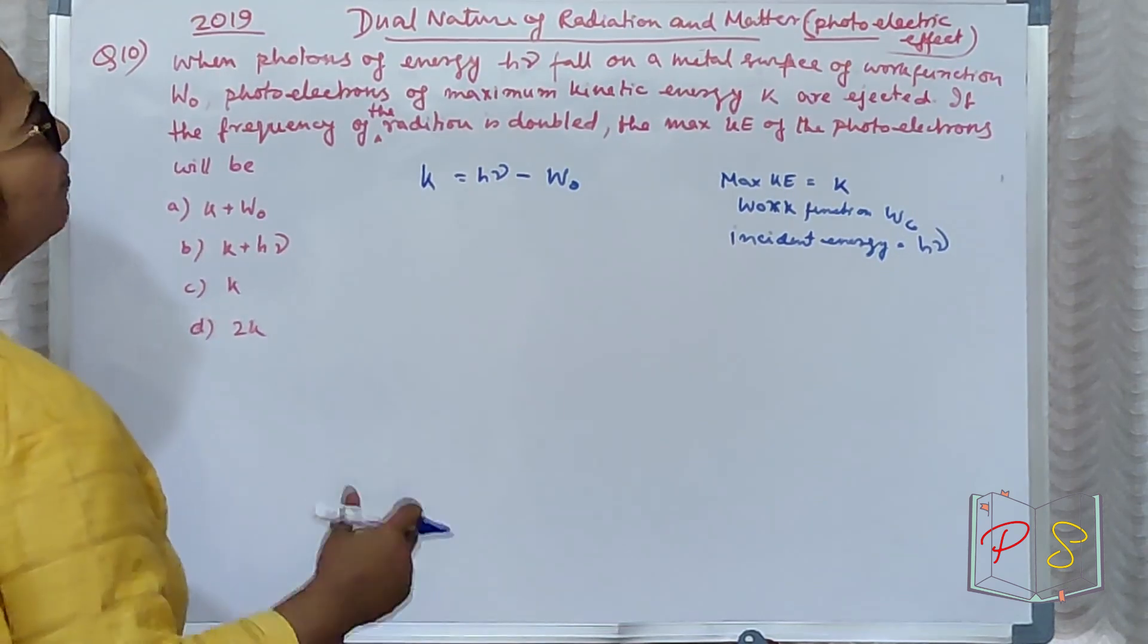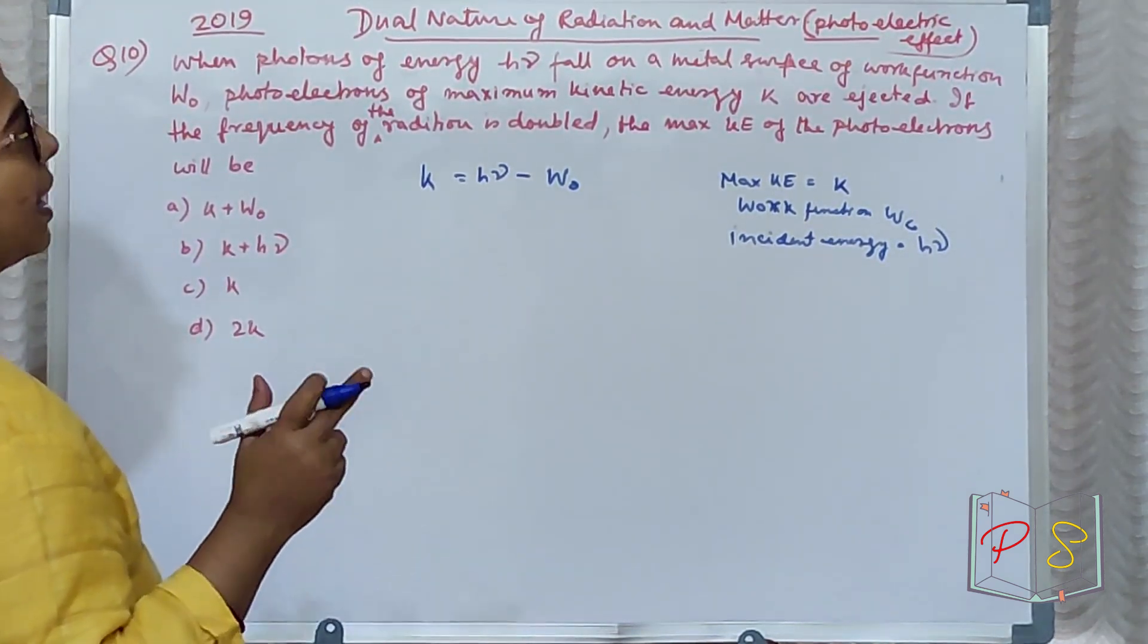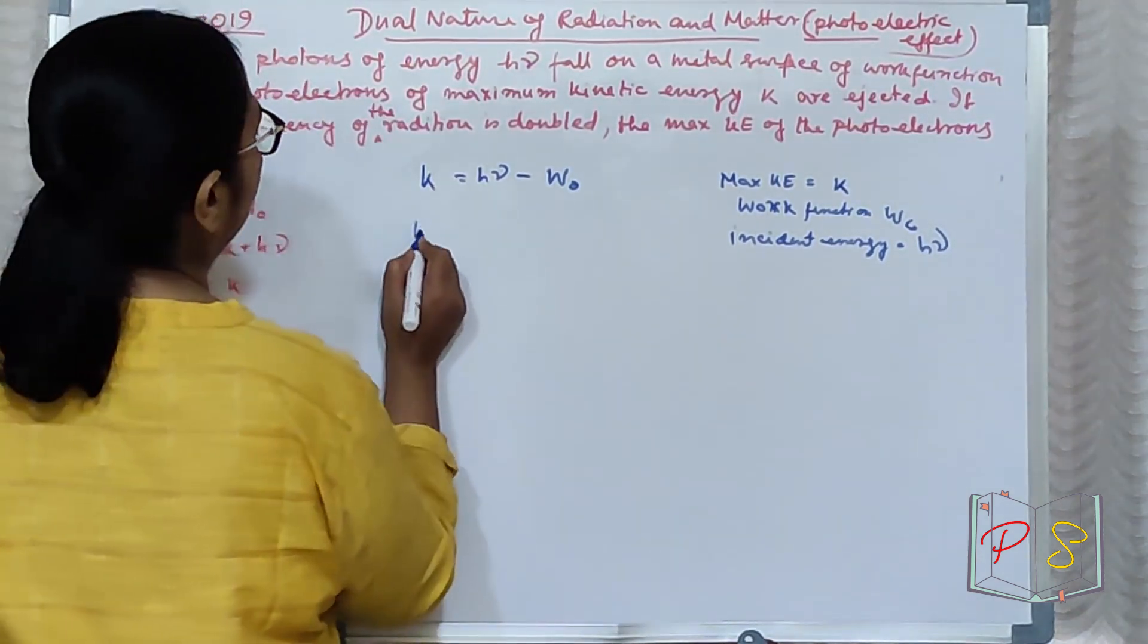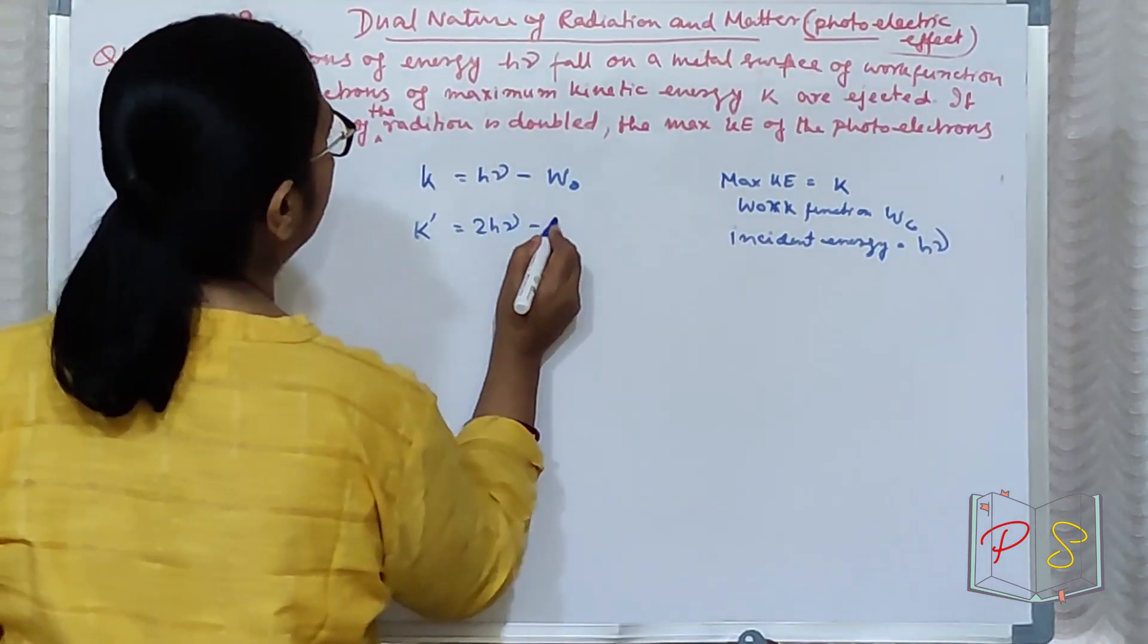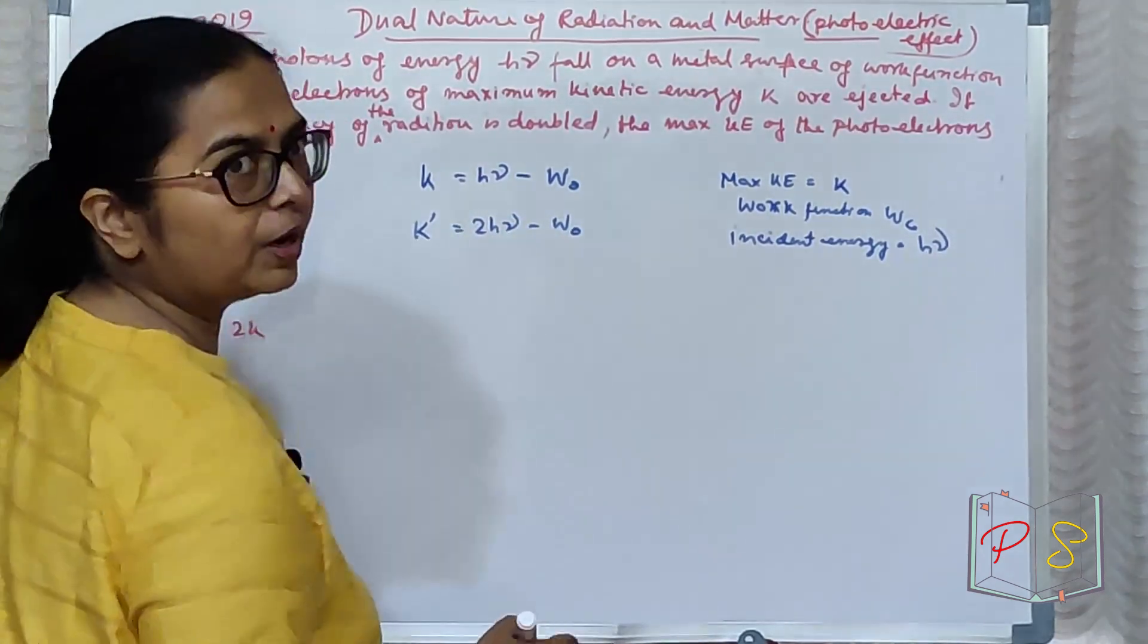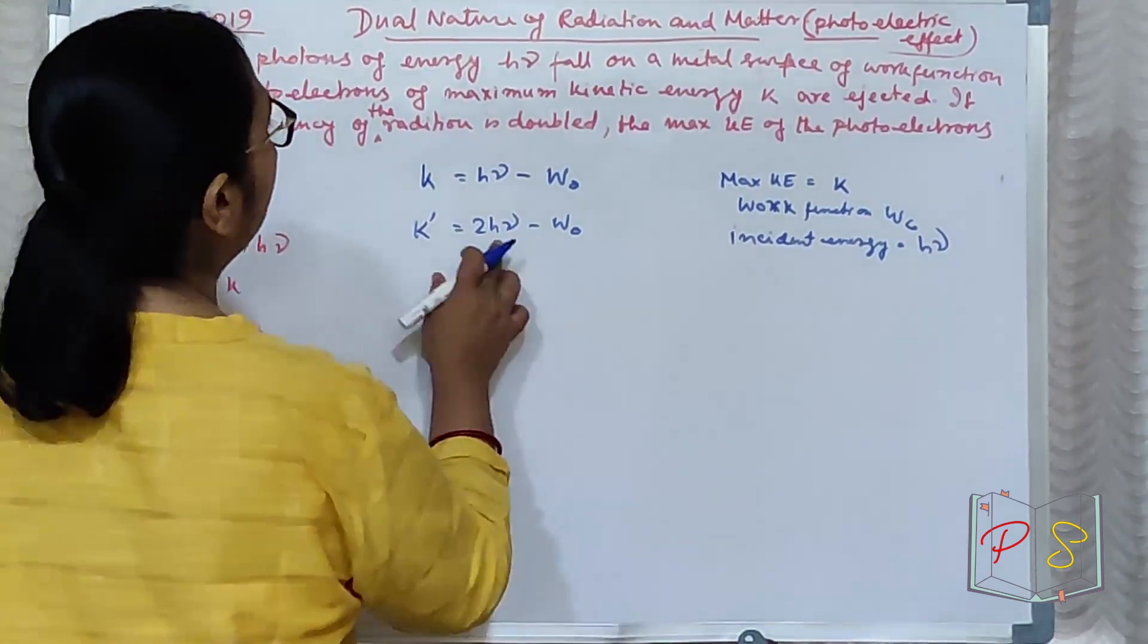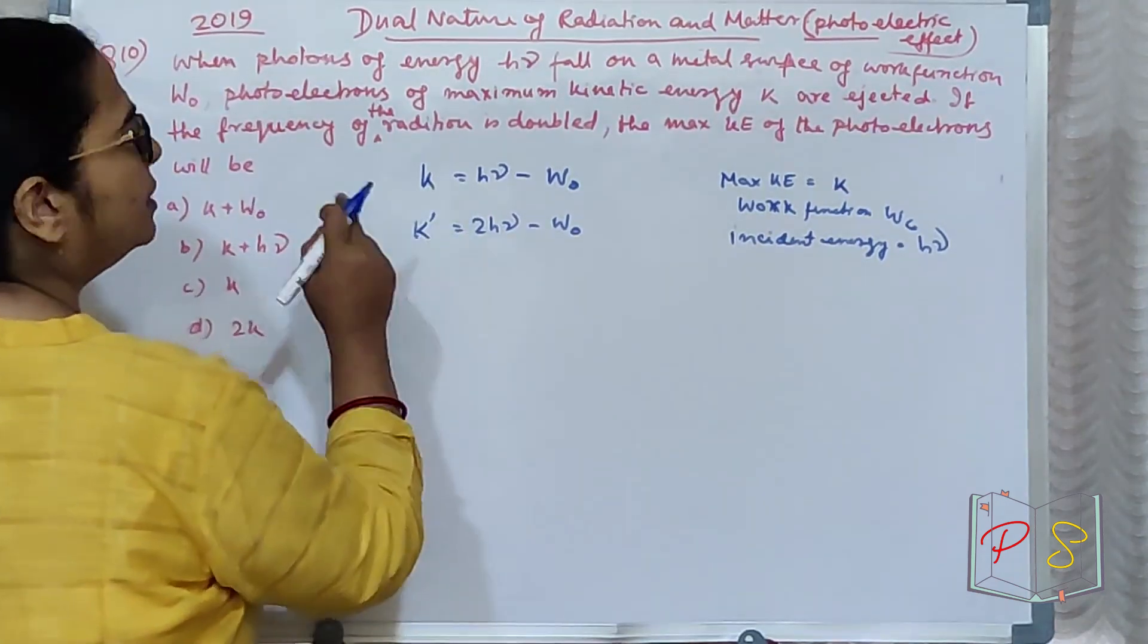If the frequency of radiation is doubled, then the maximum kinetic energy of the electrons, suppose that will be K' equal to 2hν minus W₀. So W₀ to work function, metal surface ka property hai. Usmein to change nahi aega. Incident frequency 2 times kar diya.